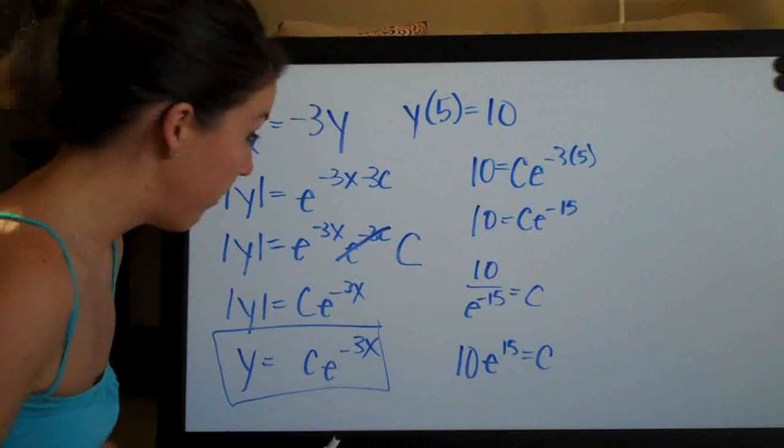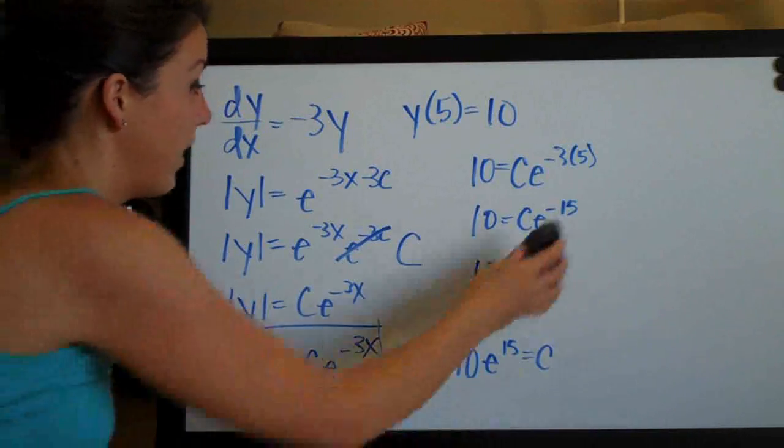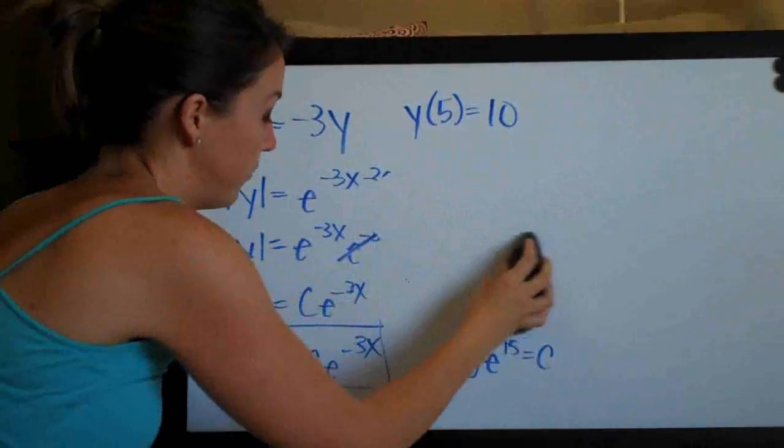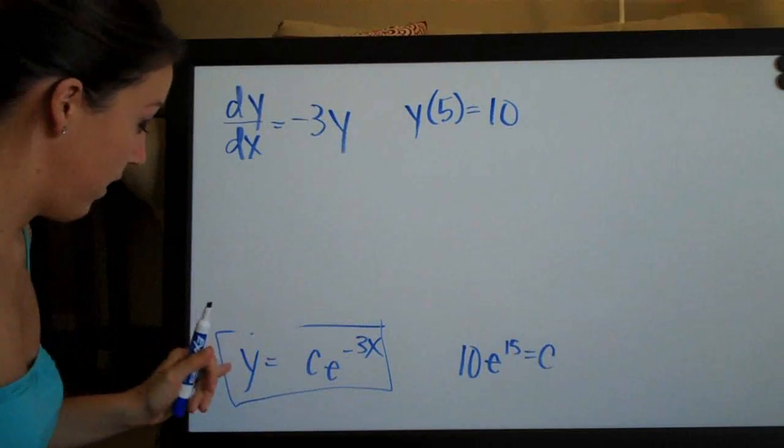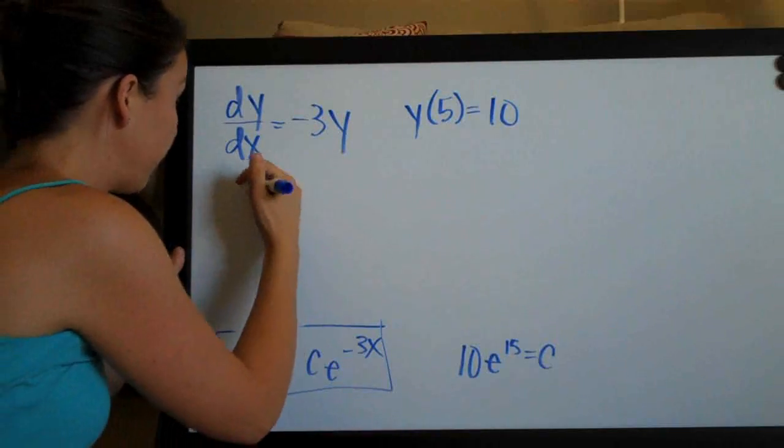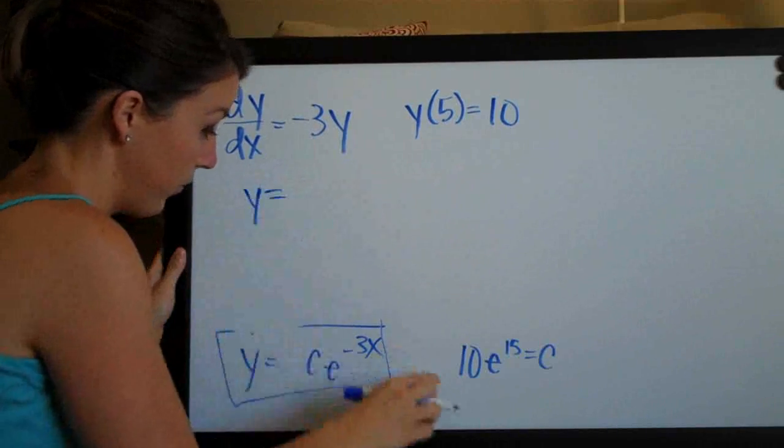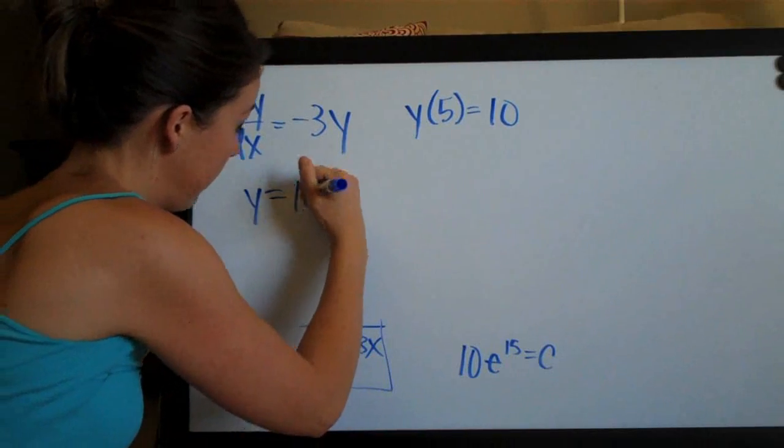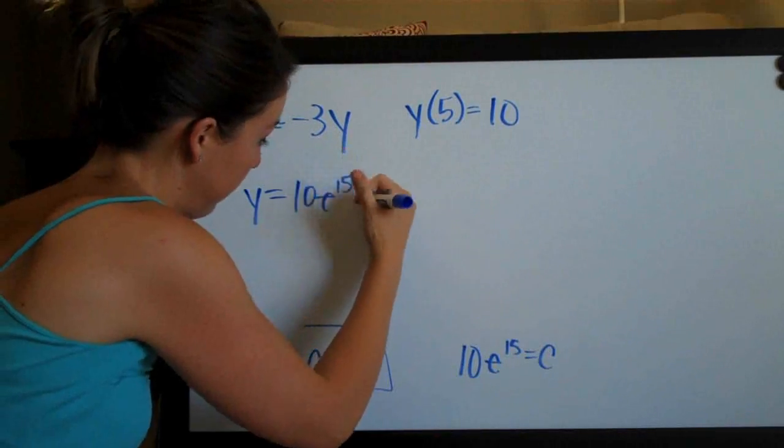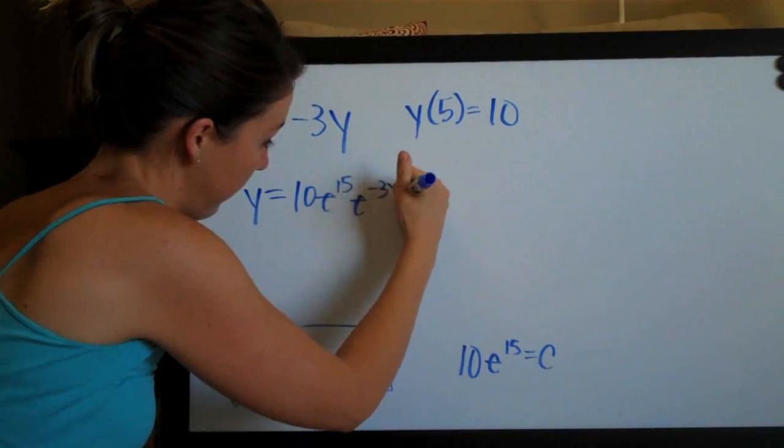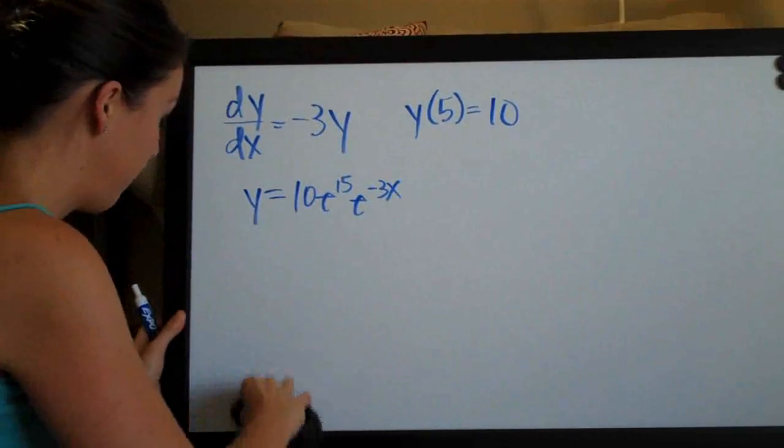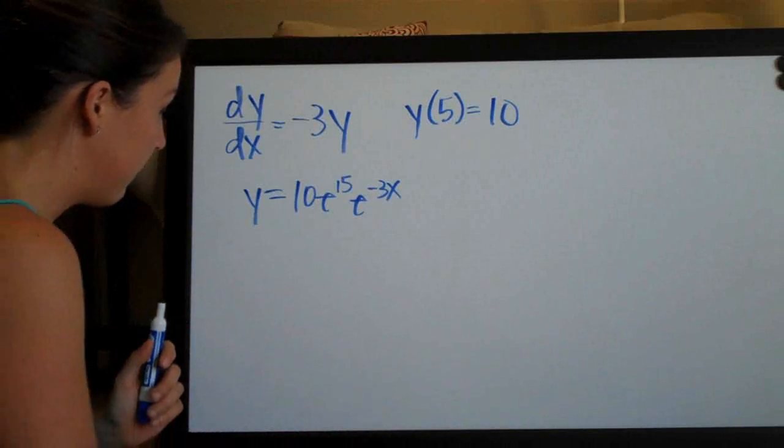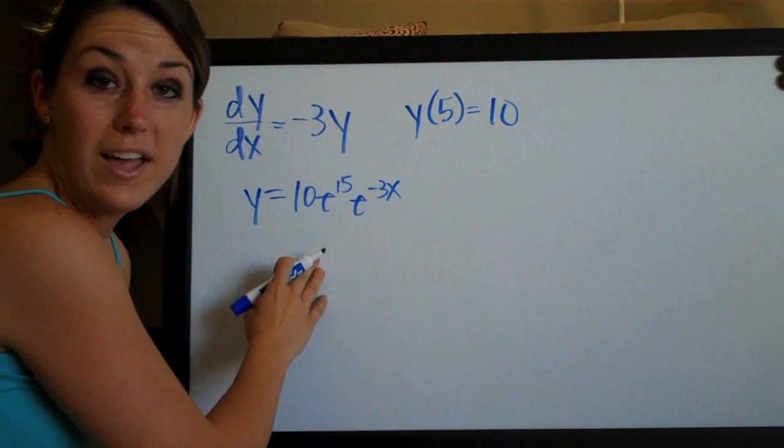And now that we've solved for c, our last and final step is to go ahead and plug c, our answer for c, back into this function here, this equation that we found. So we have y equals c, which is 10 e to the 15, and then e to the negative 3x. So now that we've plugged c back in, all we have to do is simplify and we're done.